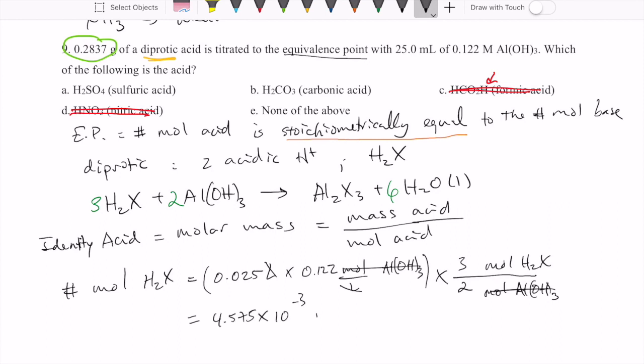Molar mass of the acid is going to be the mass, 0.2837 grams, over the number of moles that we just calculated, and that ends up being 62 grams per mole.